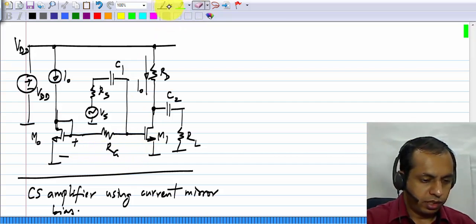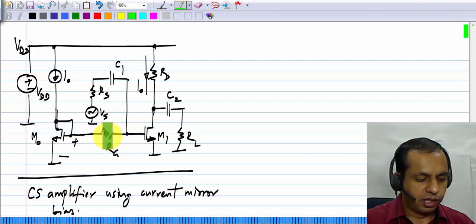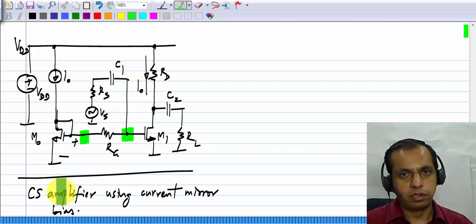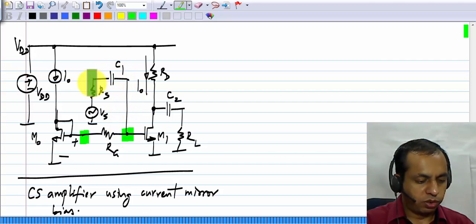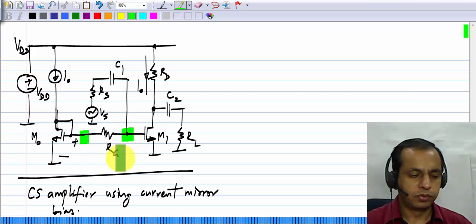This Rg plays a somewhat similar role as before. Essentially, putting Rg here makes sure that the DC voltage here and there are the same, but C1 is expected to be very large. This point will get shorted to that for signal frequencies, and you have to choose Rg very large so that there is no division of voltage between Vs and the gate. I hope this part is clear.